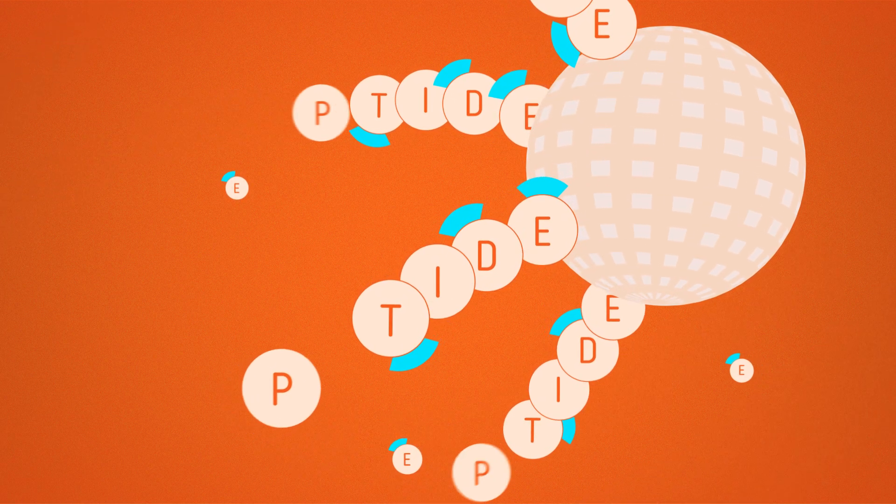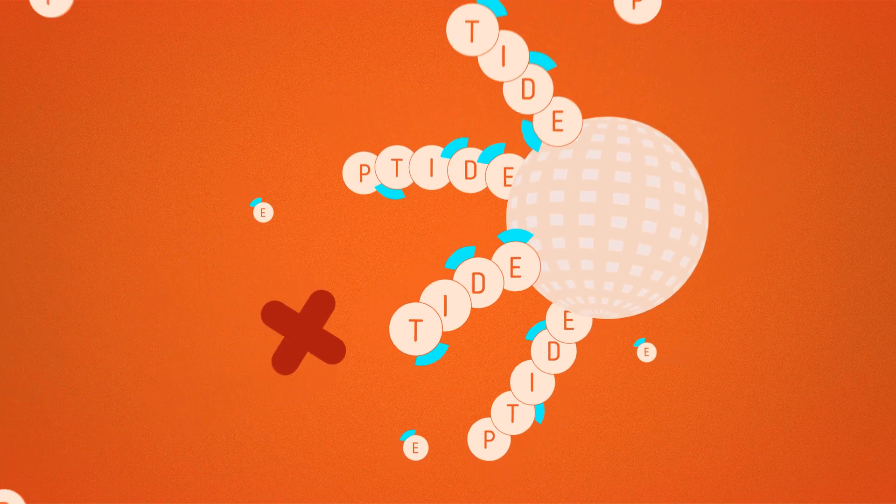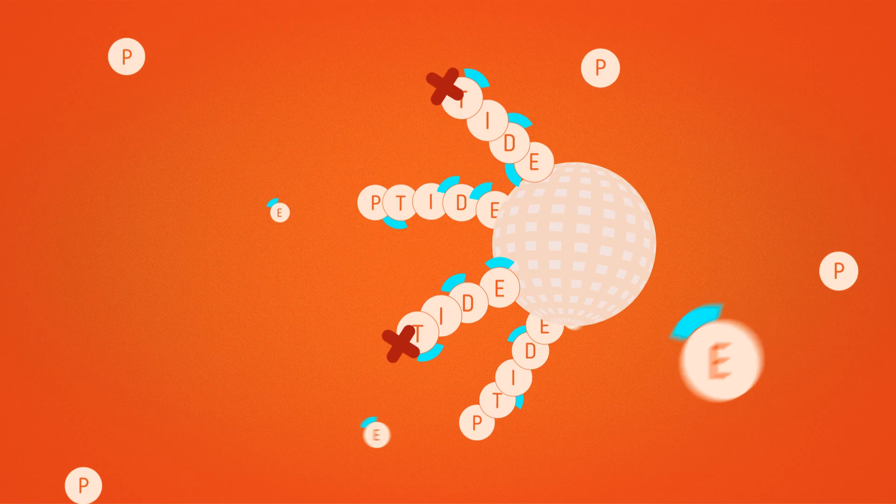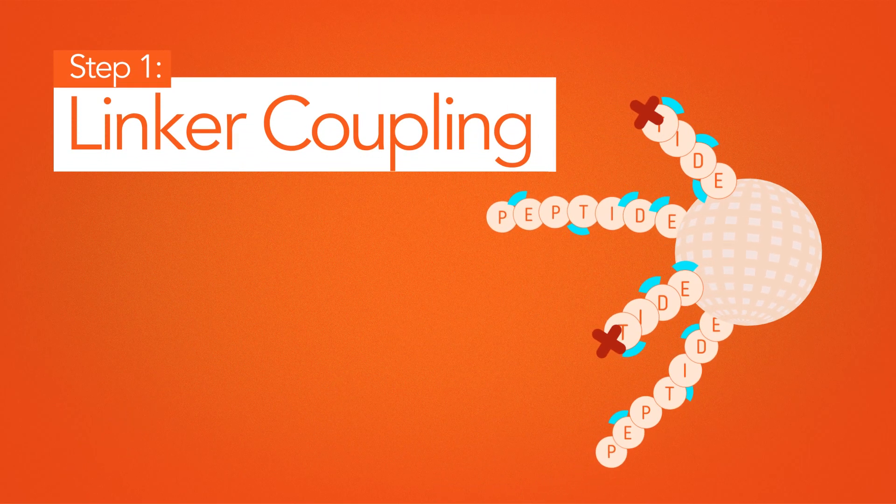Very important! You need to cap after each amino acid coupling to deactivate unreacted sites on your growing chain. Capping ensures that only your target peptide sequence is ready for Step 1 of the purification process.